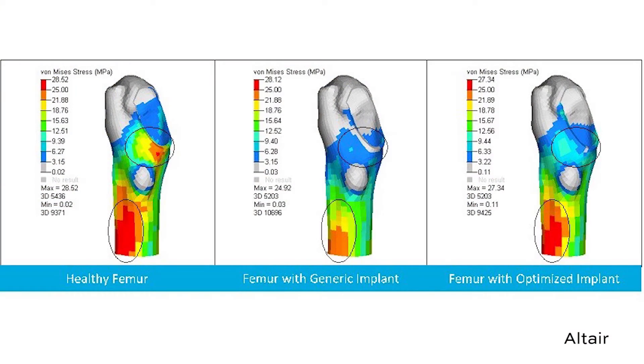The big difference between generative and topological is generative gets into other ways of doing things. We're starting to see people explore growing the part. One of the best generative design examples in the world is organic systems — plants, or your bones. Your bones have density based upon where load is, and that grows. Material's not removed; it grows that way. There's research going on in generative looking at how we grow the part rather than remove material.